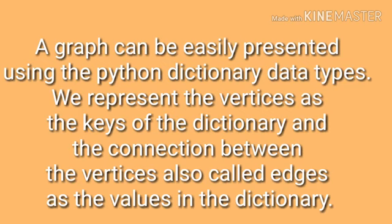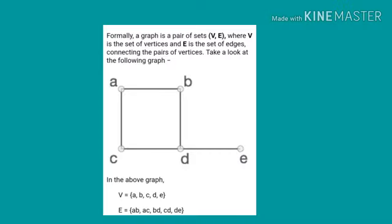A graph can be easily represented using the Python dictionary data types. We represent the vertices as the keys of the dictionary and the connection between the vertices, also called edges, as the values in the dictionary. Normally, a graph is a pair of sets V and E, where V is the set of vertices and E is the set of edges connecting the pairs of vertices. Take a look at the following graph.